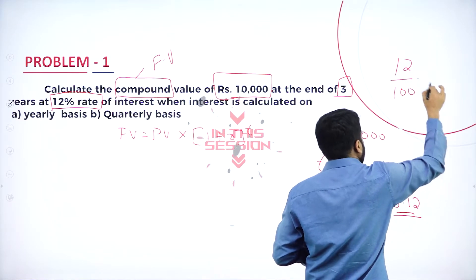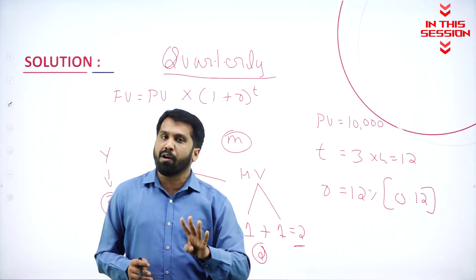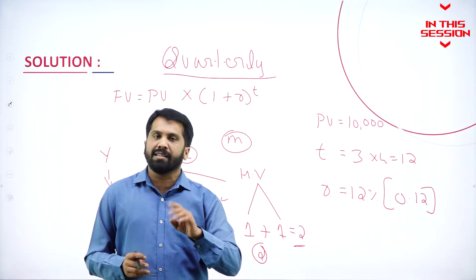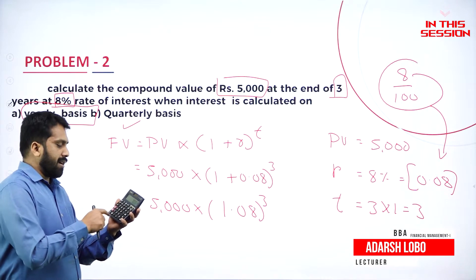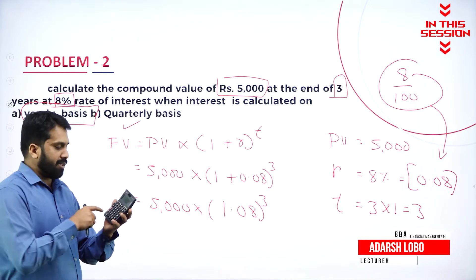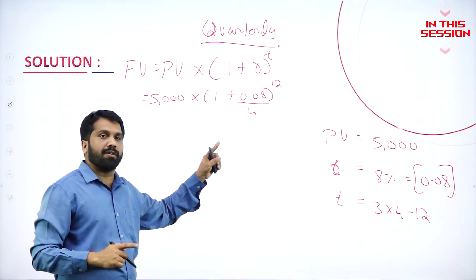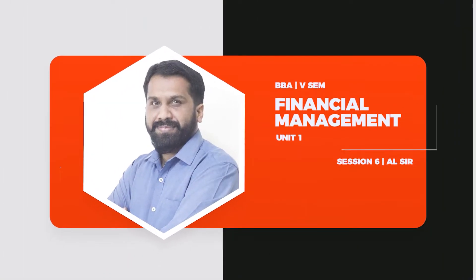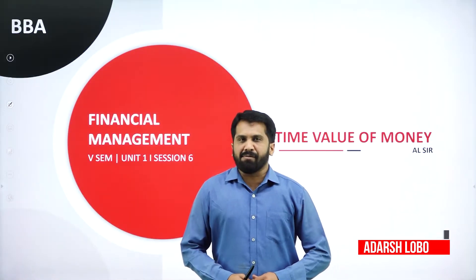12% means it is 0.12. Now if the question is about quarterly, divide by 4; half yearly, divide by 2; yearly, divide by 1; monthly, divide by 12. These are the values — 0.08 multiplied three times if you are doing quarterly.